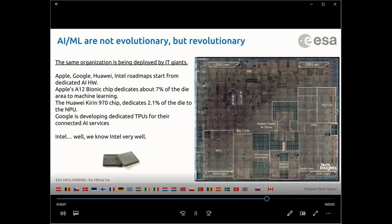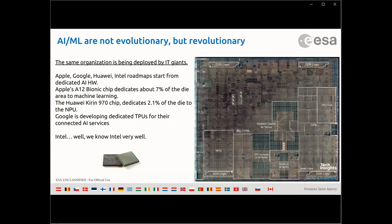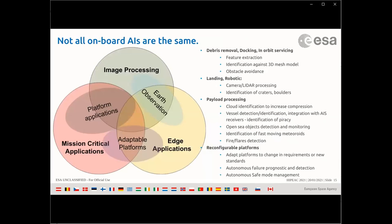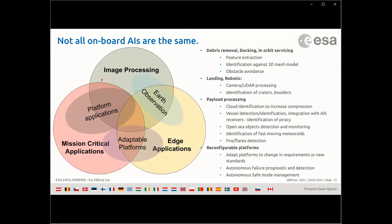Many IT giants — if you look at the coming system-on-chip from Apple, Google — they dedicate larger and larger parts of their SoC to neural processing units. The Apple A12 Bionic chip is seven percent NPU, which is not negligible. The way we use AI and machine learning in space is not the same — we have different criticality level applications. If we use machine learning for mission-critical applications it's one thing; for simple image processing onboard it's less critical.